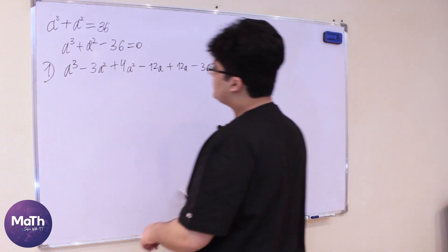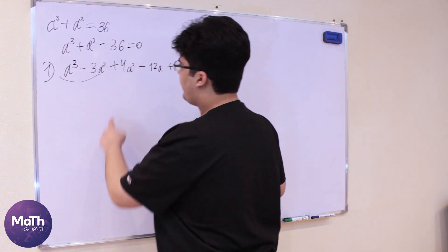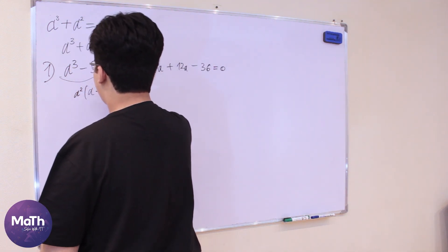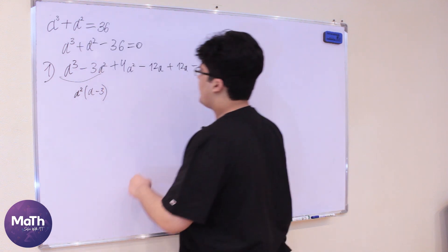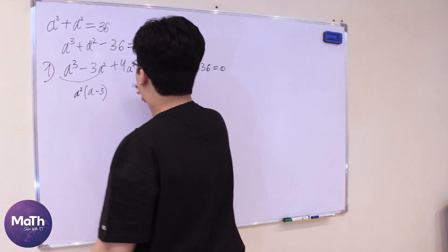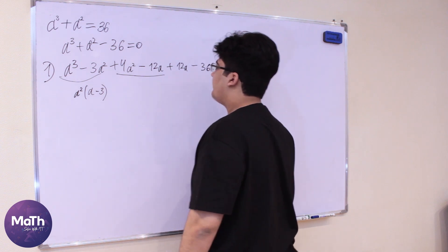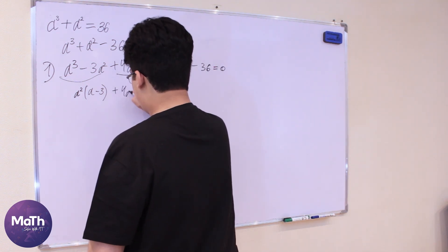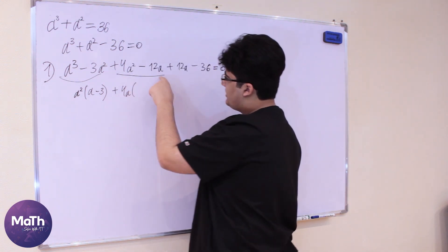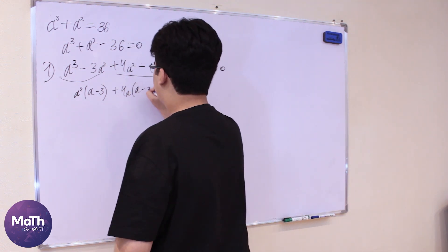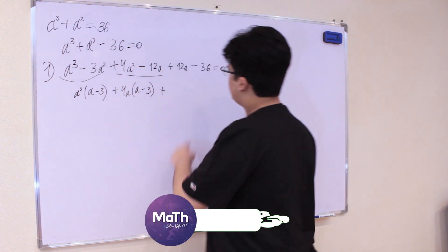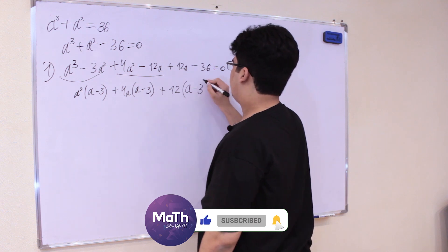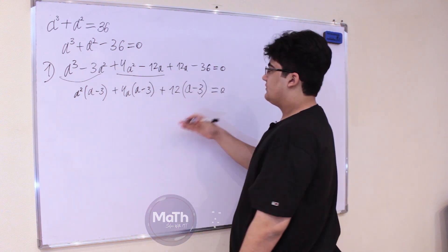We still have -36 = 0. Now let's take a² out of the first part, giving a²(a - 3). Then from 4a² - 12a, we take out 4a, giving 4a(a - 3).